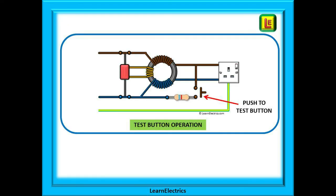When the test button is pressed a resistor is introduced into the circuit. This resistor is connected between the load side of the phase and the supply side of the neutral. There is now an imbalance between phase and neutral, and the resistor value has been selected to give a difference of 30 milliamps — enough to cause the RCD to operate.